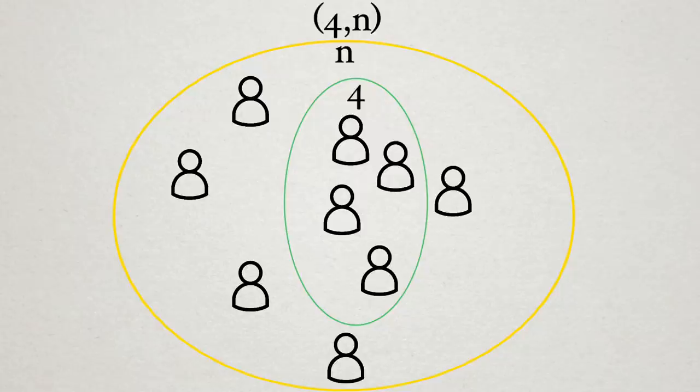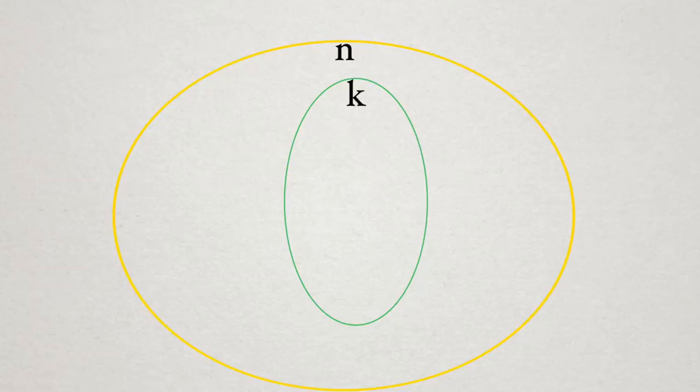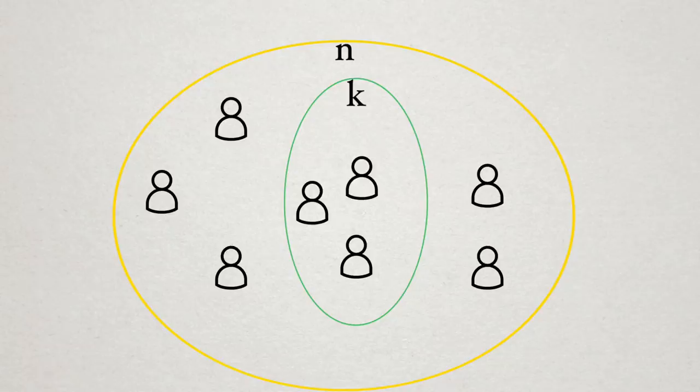Finally, we can generalize this scheme to work with any subset size k we desire by using a curve which is defined by k points. Then we can generate as many shares as we'd want, defined by n, leading to a k-out-of-n sharing scheme, where k is the minimum number of shares to unlock a secret. And that's it.